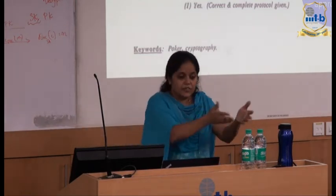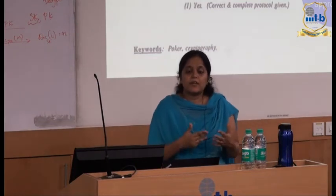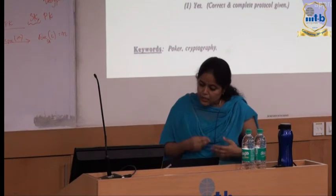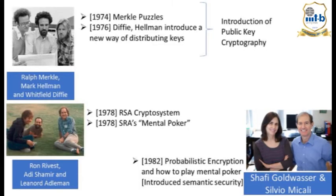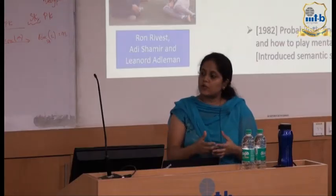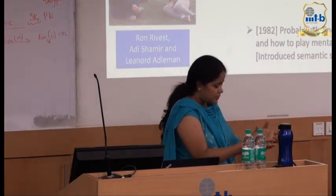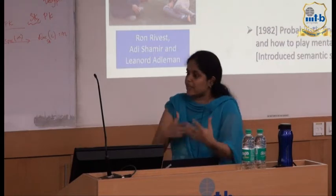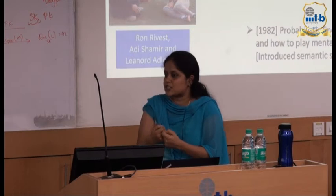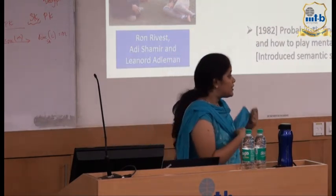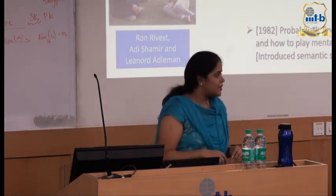Every time you run a deterministic algorithm, you get the same output — it's just F of X. That's when the realization came that for public key cryptography, you necessarily need randomization. In working through the mental poker problem, they solved it, and the paper 'How to Play Mental Poker' won a Turing Award. Interestingly, the RSA system came about because Adelman was a number theorist, and Rivest and Shamir would propose encryption schemes at MIT while Adelman kept breaking them — until they finally arrived at RSA.